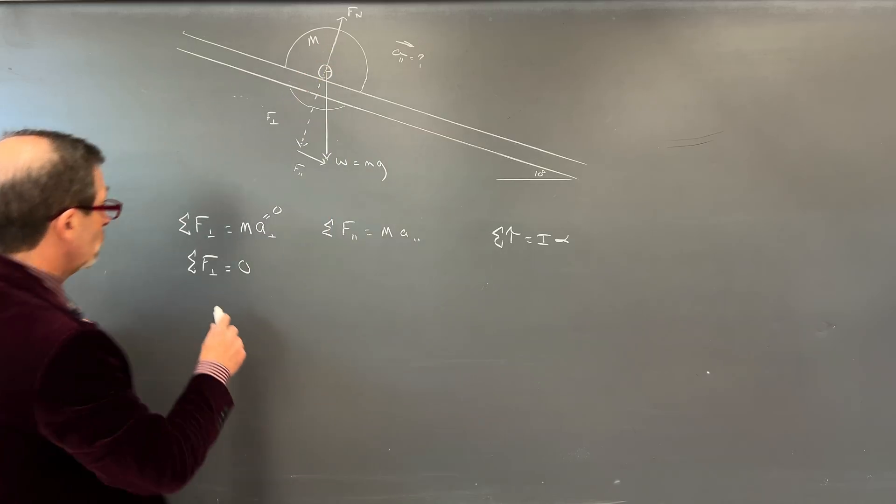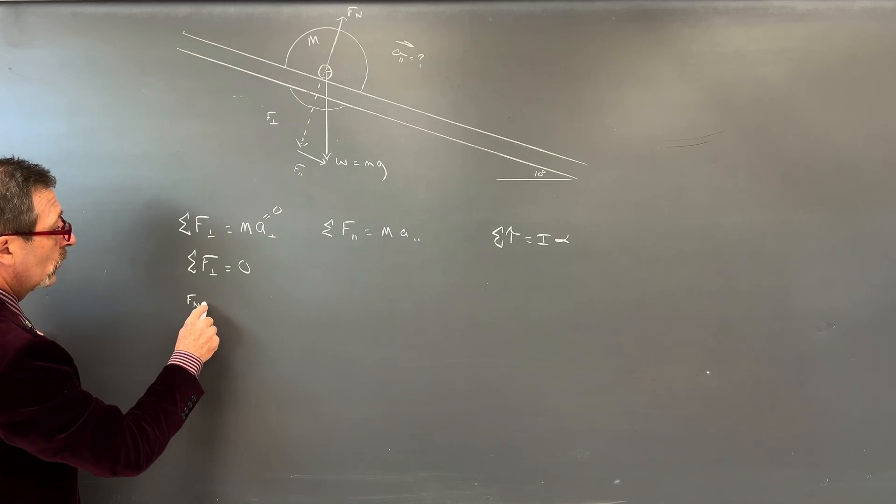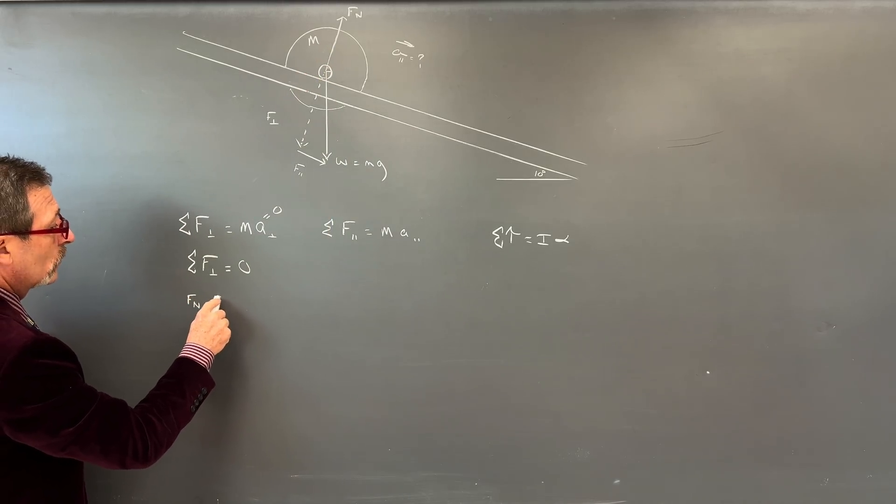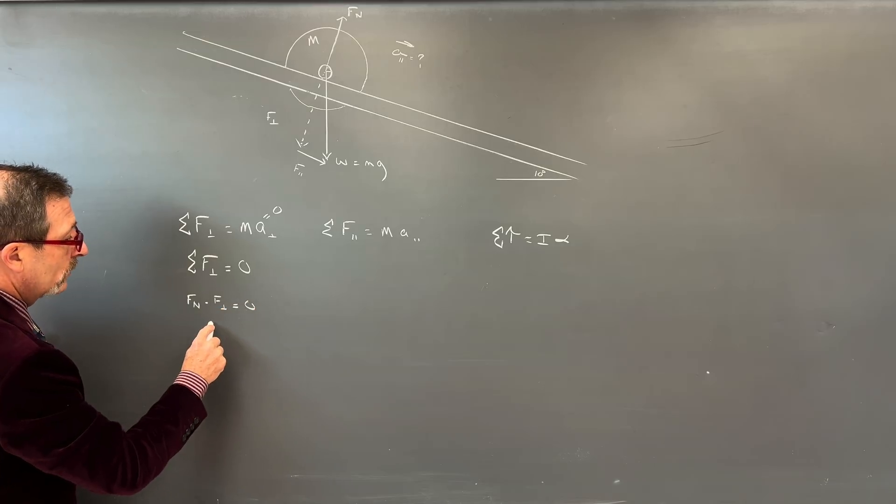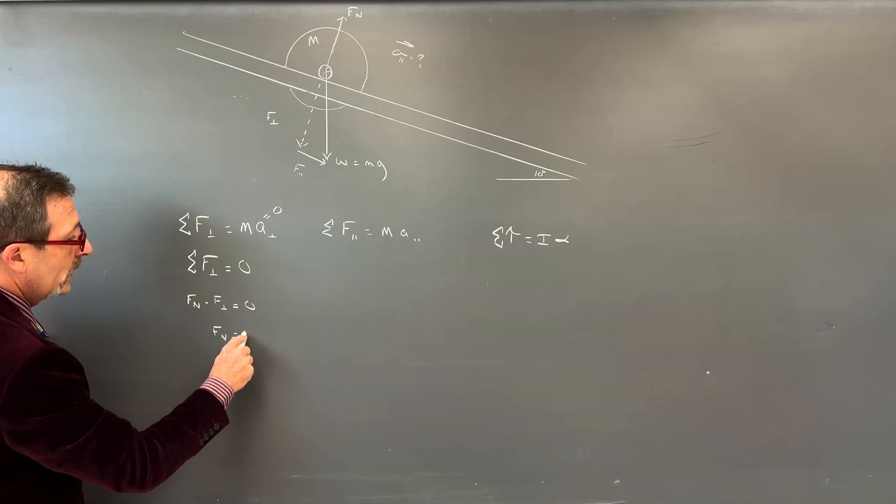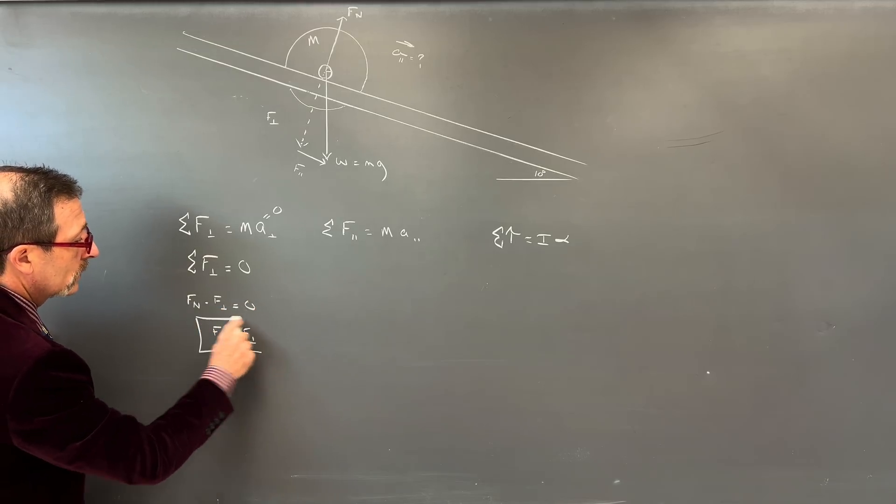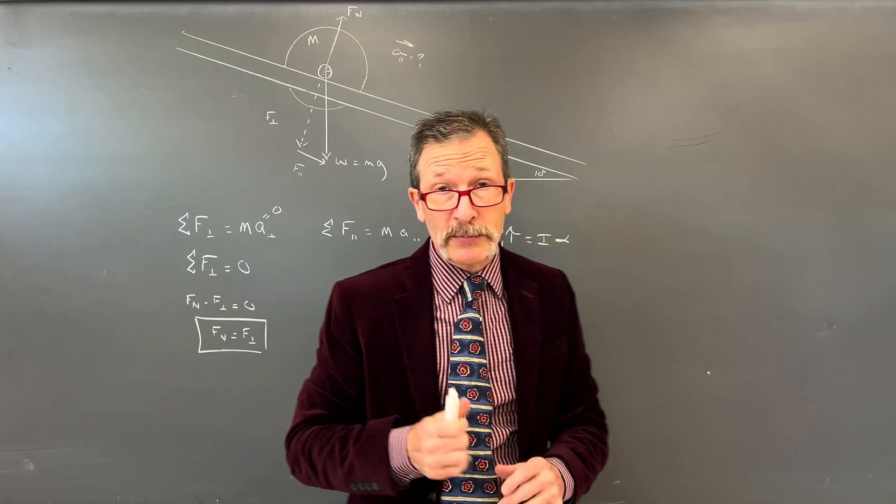Let's do the perpendicular first. We know that it's not going to be accelerating off the plane. So I could say the acceleration perpendicular is equal to zero. Therefore, the sum of the forces perpendicular are equal to zero.